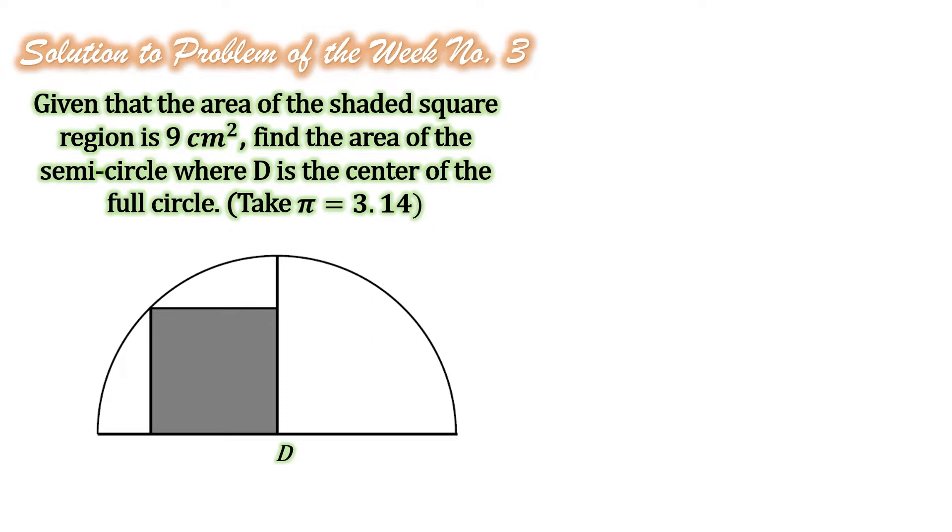Given that the area of the shaded square region is 9 cm², find the area of the semicircle where D is the center of the full circle. Take pi is equal to 3.14.